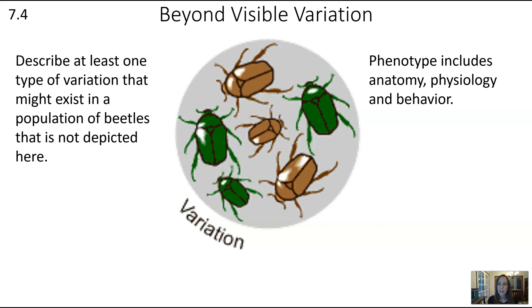There are just infinite answers, so I'm not going to give you all of those. But keep in mind that phenotype includes anatomy, physiology, and behavior. For example, a beetle that is more active and goes out even in a scary situation — even beetles can have stable personality traits. That type of behavioral trait can be acted on by evolution.